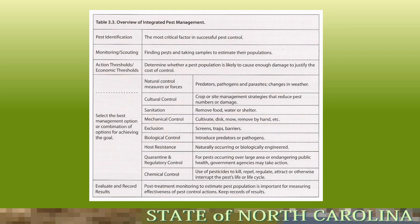IPM overview: pest identification is the most critical factor in successful pest control. Monitor and scout — find the pest and take samples to estimate populations. If you don't know what it is, take a picture or bring a sample back to the office. Action thresholds, or economic thresholds, determine whether a pest population is likely to cause enough damage to justify the cost of control. Sometimes it may cost more to apply the pesticide than to simply let it go.